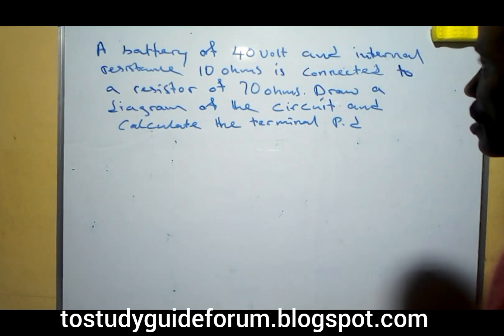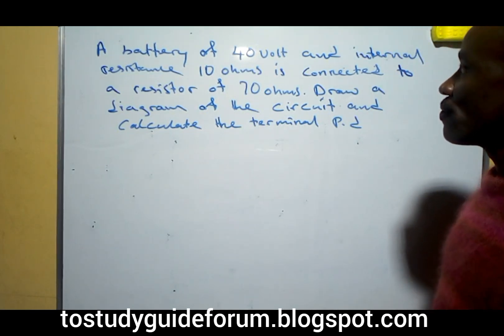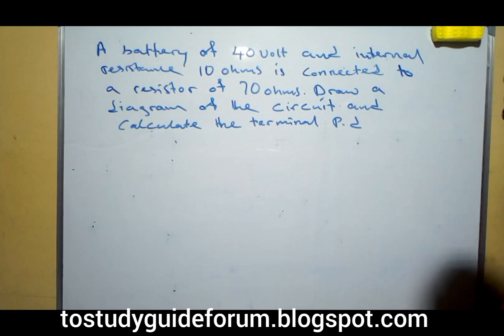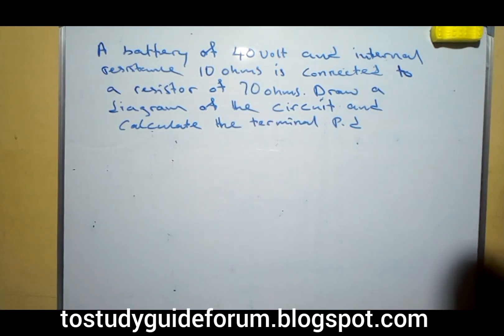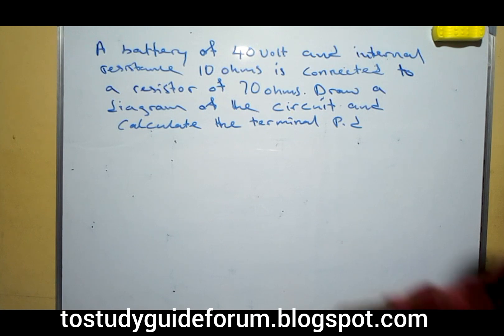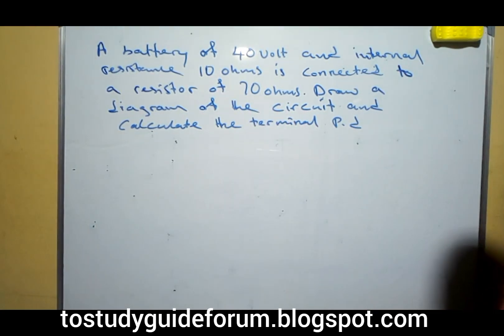The equation says that the battery, the battery of 40 volts and internal resistance 10 ohms, is connected to a resistor of 70 ohms.